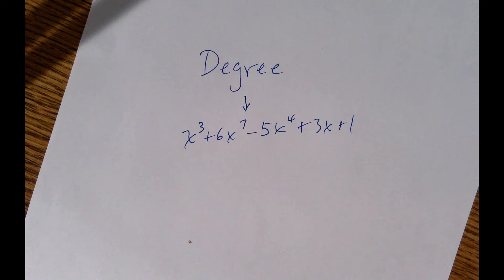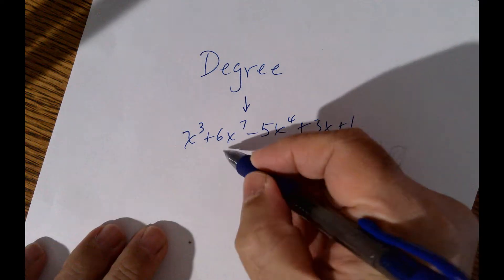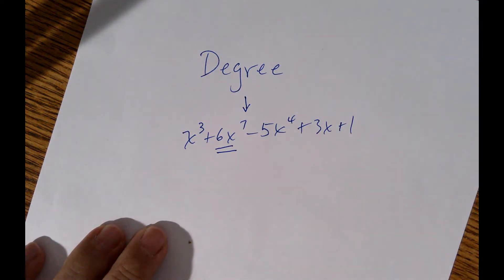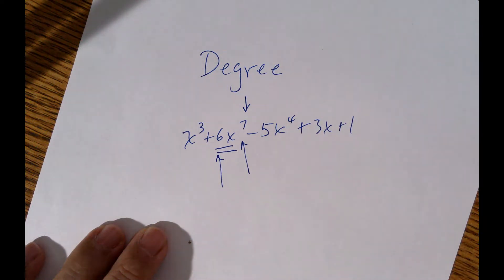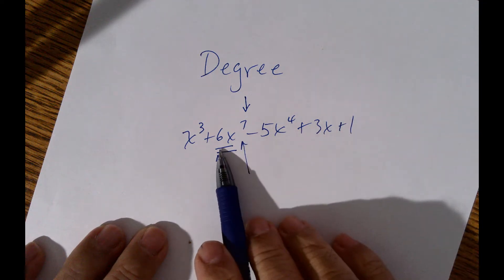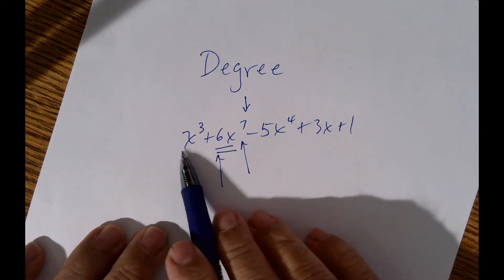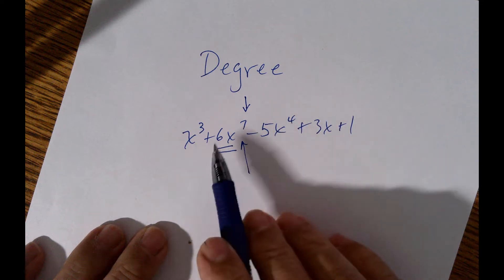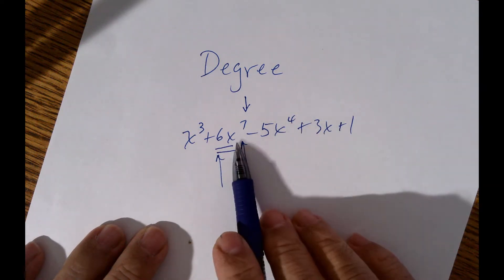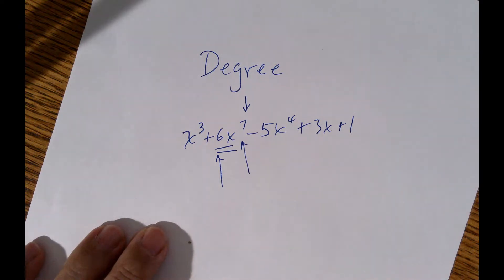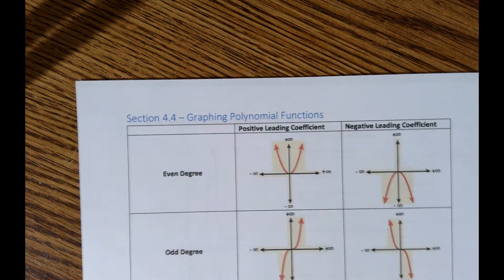The degree of this polynomial is 7 — you find the highest exponent and that's the degree. The leading coefficient is the coefficient of the term with the highest exponent. Here the leading coefficient is 6, not 1, even though x cubed appears up front.